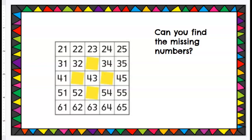Let's see if you can figure this out without a hundred grid. I took part of a hundred grid and put it here, but I put little yellow sticky notes over four of the numbers. Can you figure out what they are? Look for the pattern and see if you can figure it out.